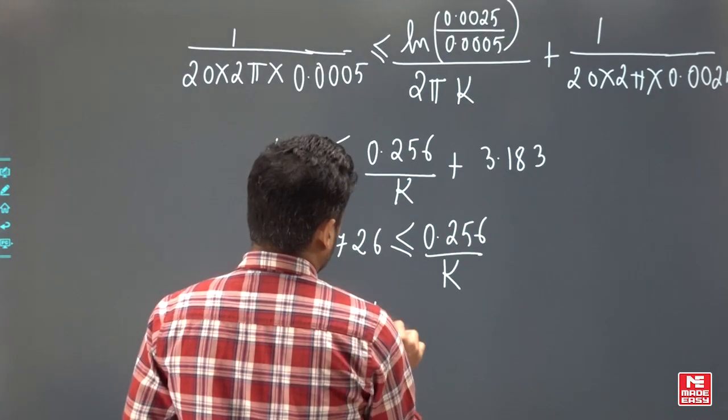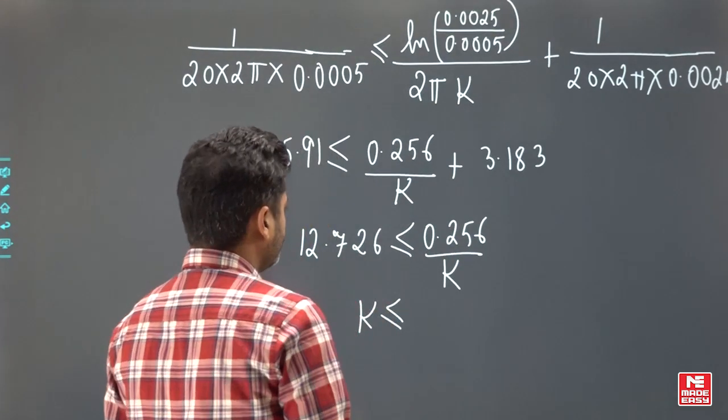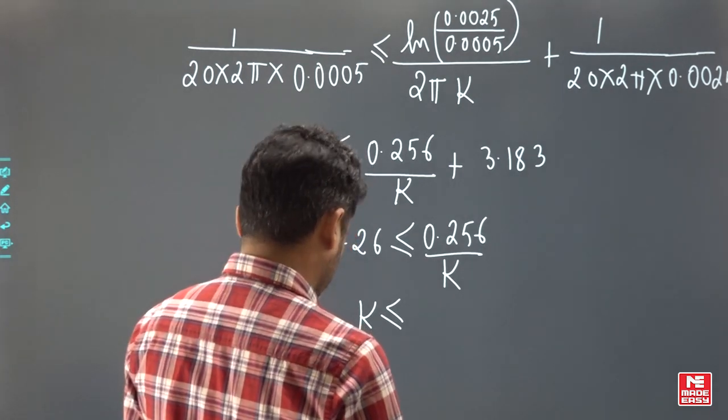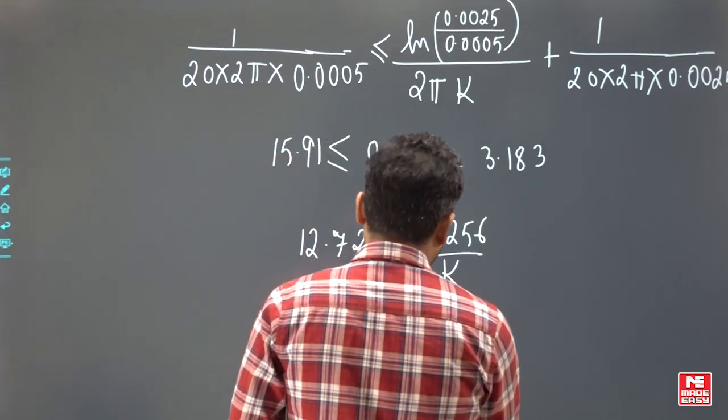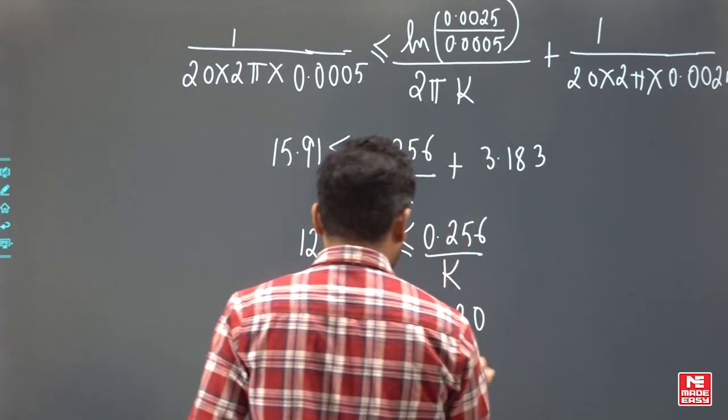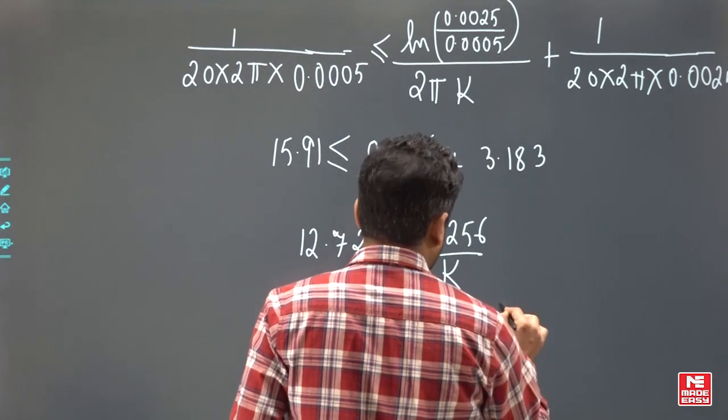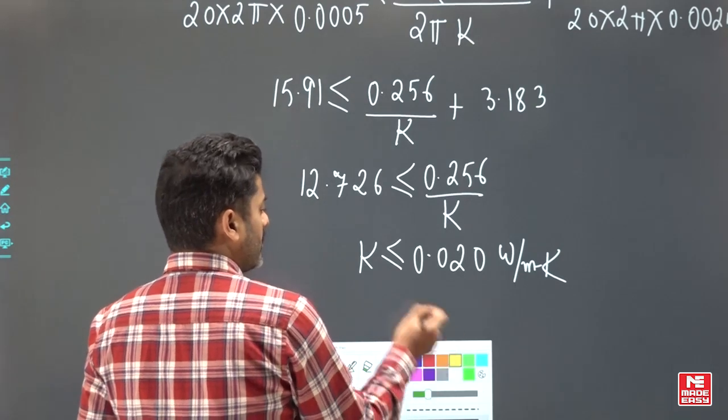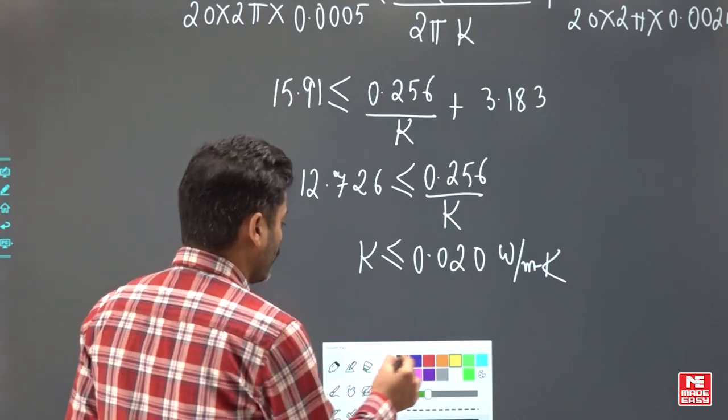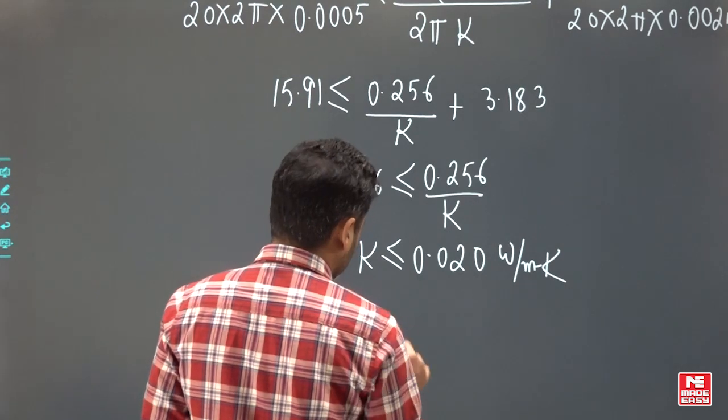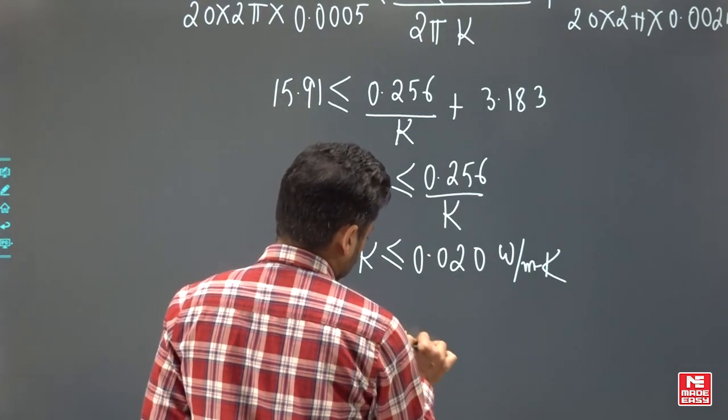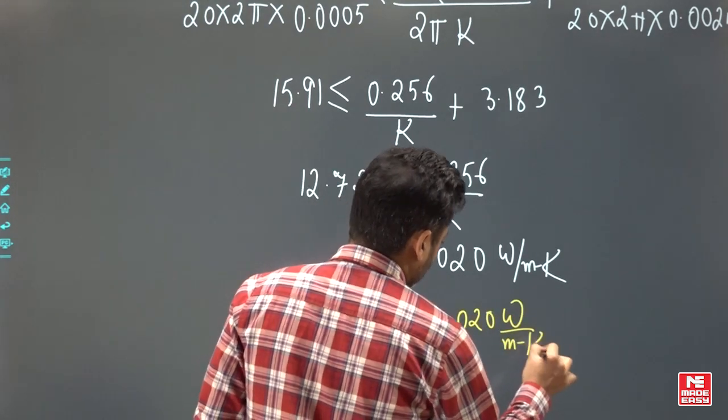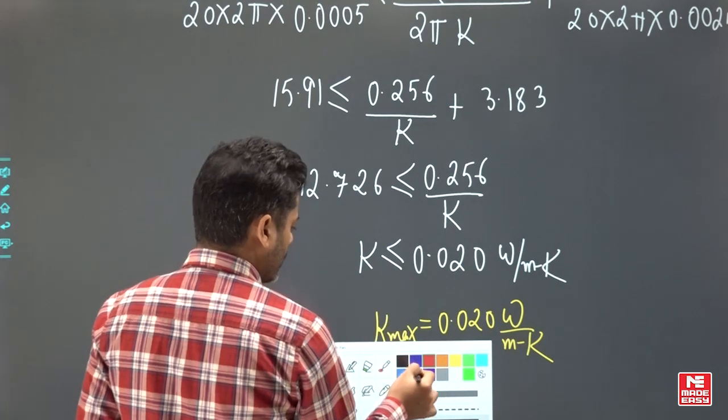Or you can say, K is less than equal to 0.020. It means what? K max is 0.020 Watt per meter Kelvin. So it is asking you K maximum value. Here you can see that K is coming less than equal to this. It means K max is 0.020 Watt per meter Kelvin. This is your answer.